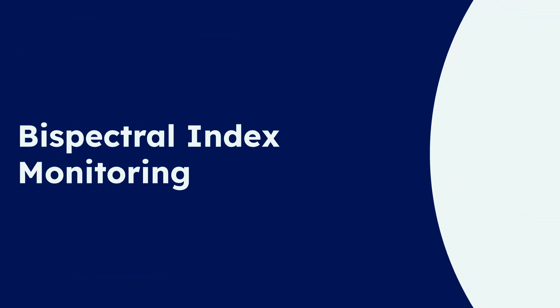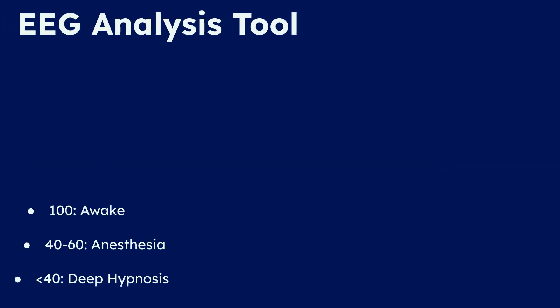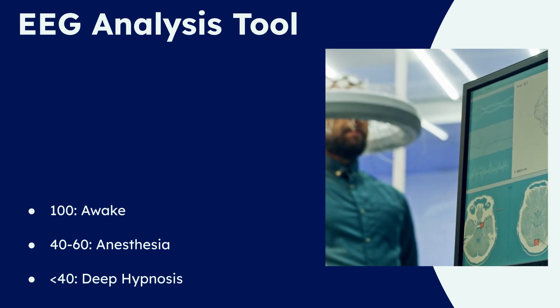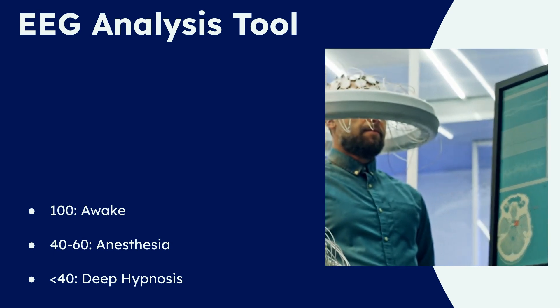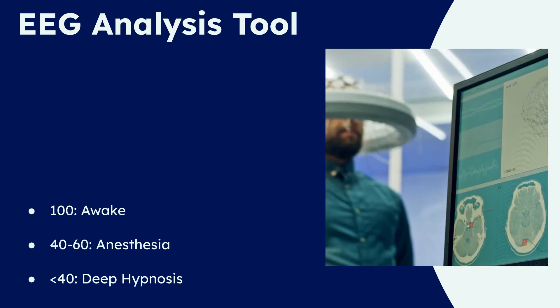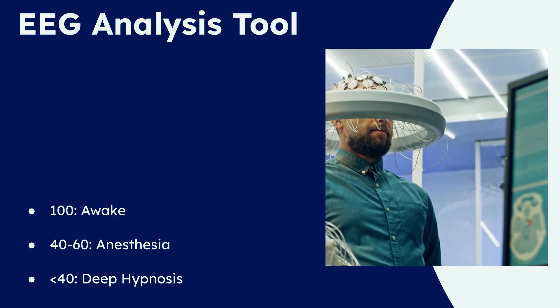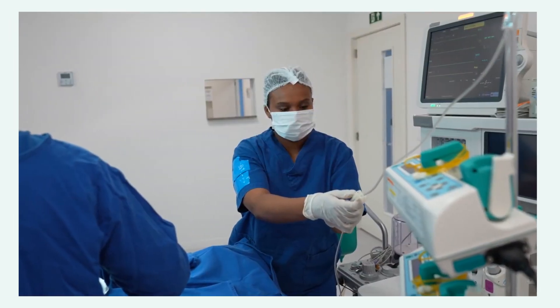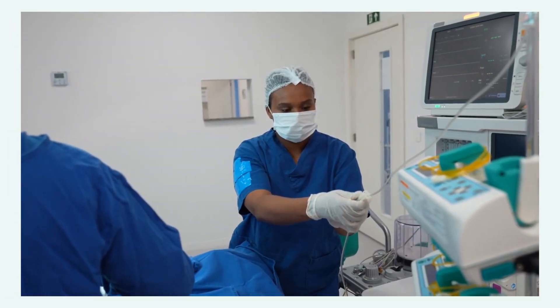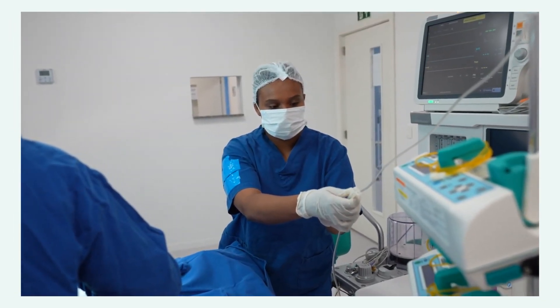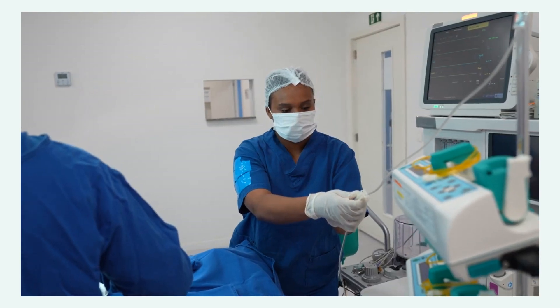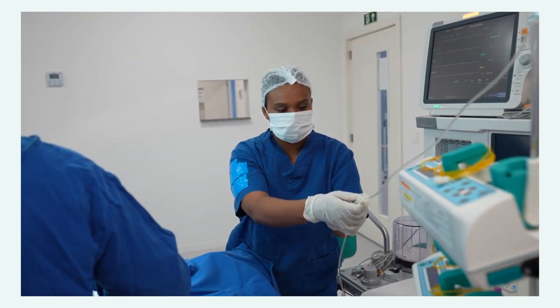Moving beyond clinical observation, we have BIS Monitoring — the Bispectral Index. This is a technology-based tool that assesses the depth of anesthesia through EEG analysis. The BIS score ranges from 0 to 100: a score of 100 means fully awake, while 40 to 60 is the target for general anesthesia, and below 40 indicates a deep hypnotic state. BIS offers an objective measurement of brain activity, allowing anesthesiologists to optimize drug delivery and avoid over- or under-sedation, enhancing patient safety.